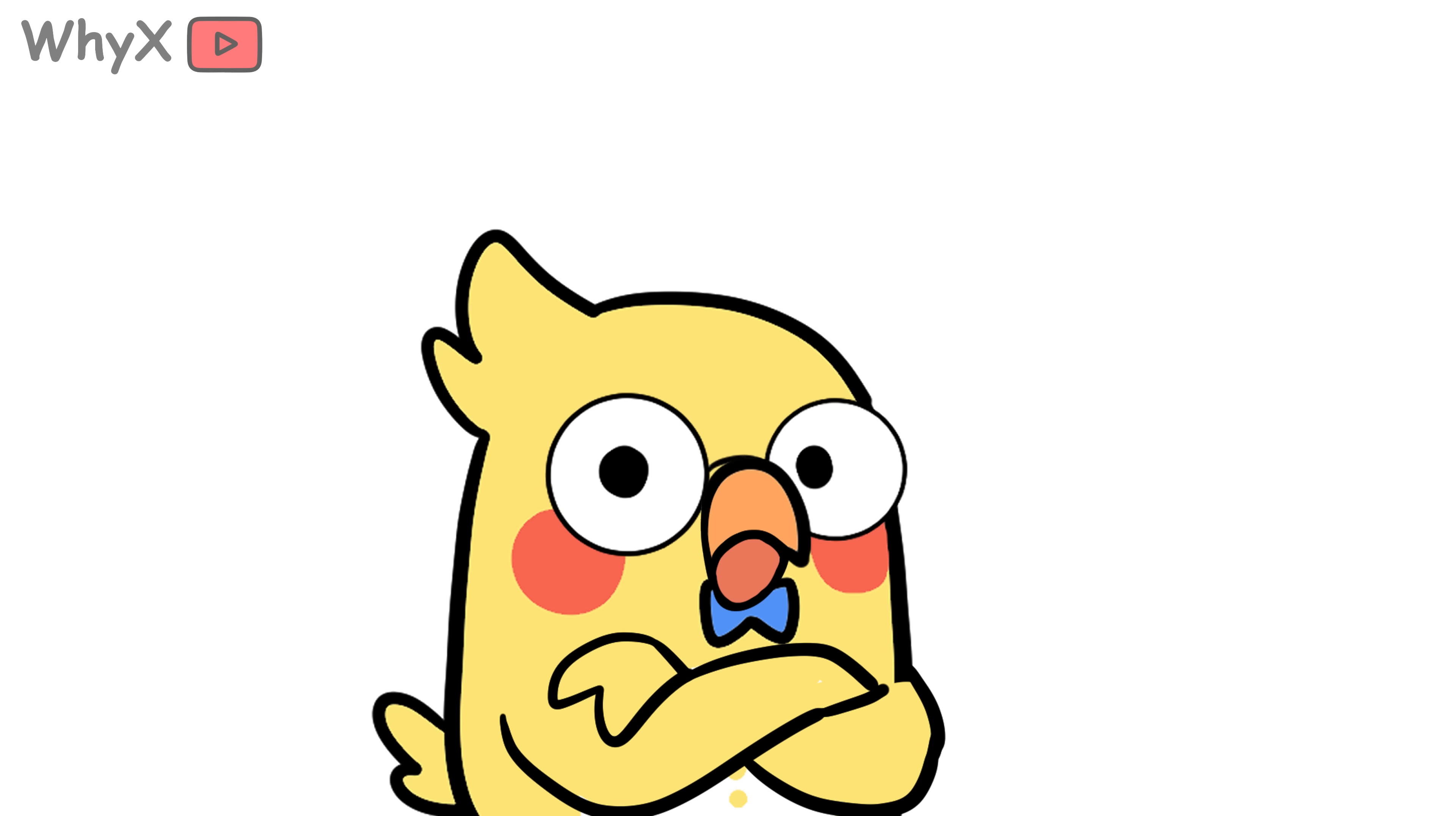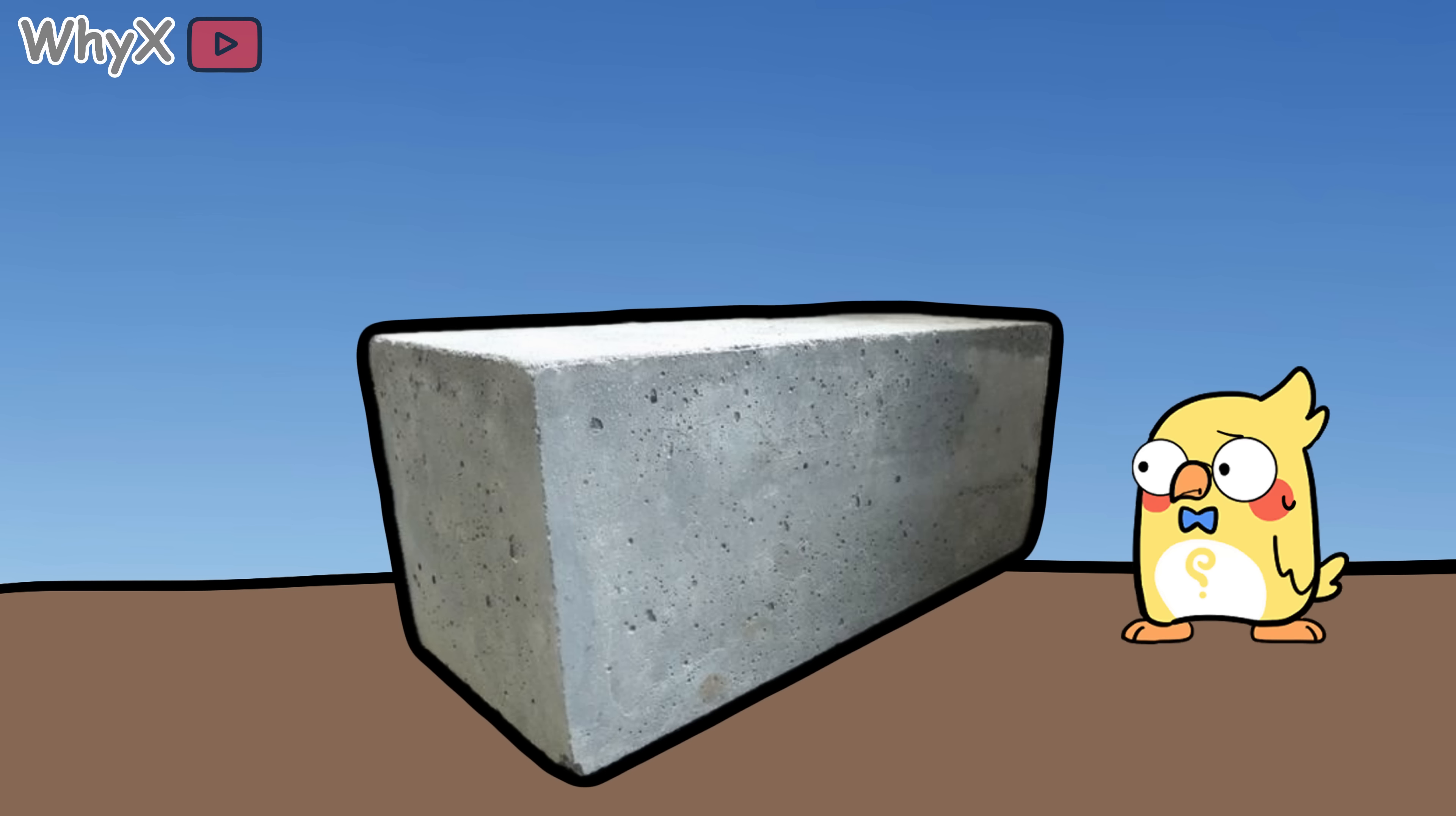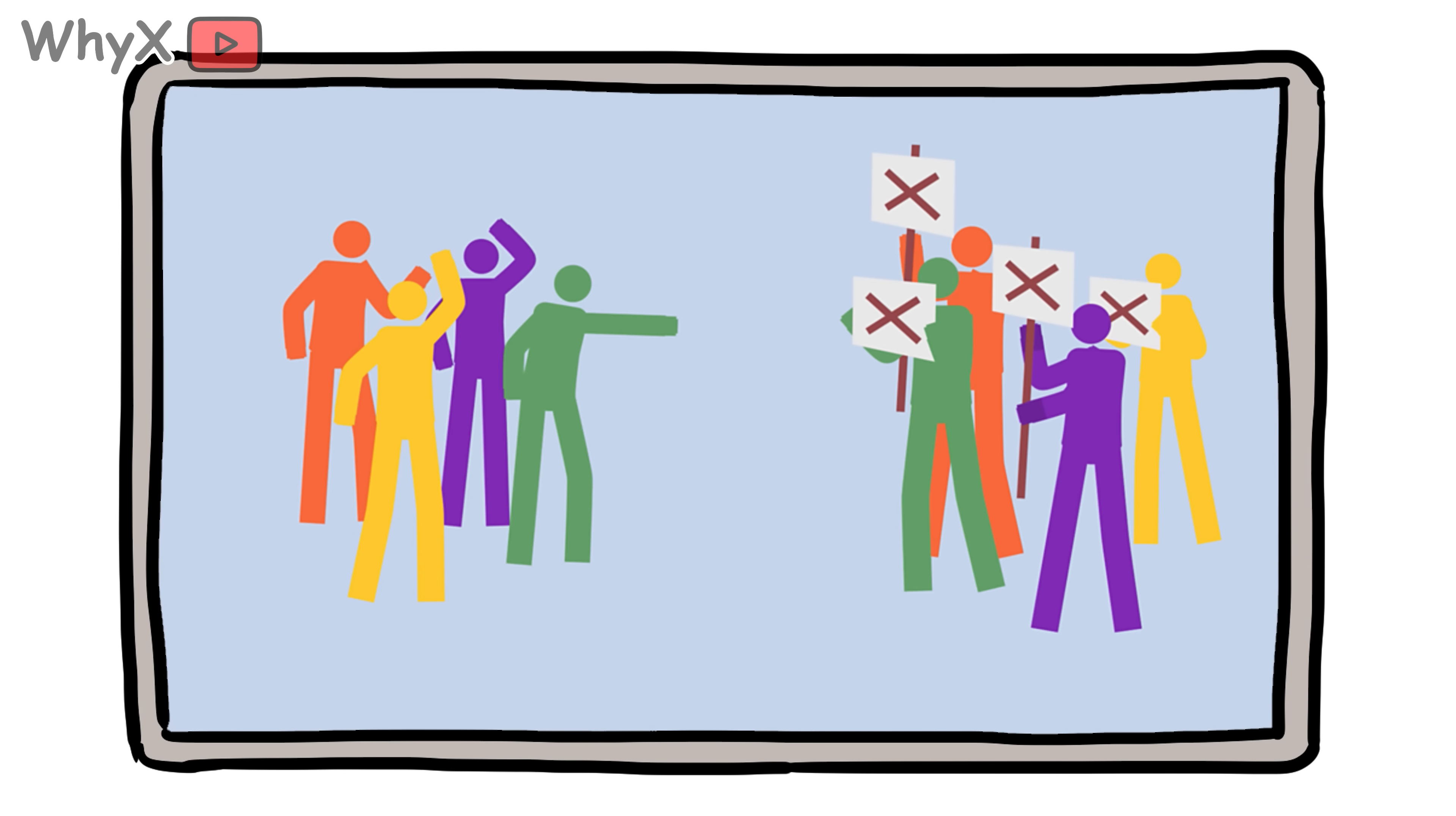And like any black market, the more profit there is to be made, the harder it becomes to regulate. Here is something most people have never considered: sand can be a matter of national security. Think about it. If a country cannot source enough sand, it cannot build housing. If it cannot build roads, it cannot move goods or people. If it cannot make concrete, it cannot repair critical infrastructure. In the long run, sand shortages could trigger migration, economic decline, or even resource conflict, especially in densely populated regions.